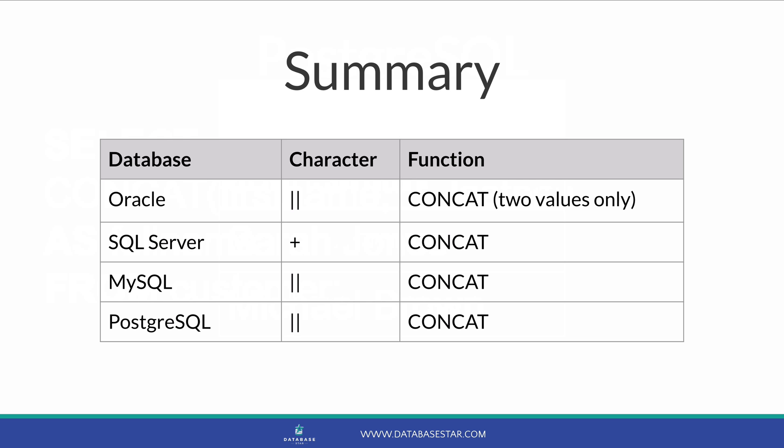This table summarizes the different ways to concatenate data. In Oracle, MySQL and PostgreSQL, you use the double pipe character, while in SQL Server you use the plus character. All four databases have a CONCAT function, but Oracle only supports two strings whereas the other databases support many more.